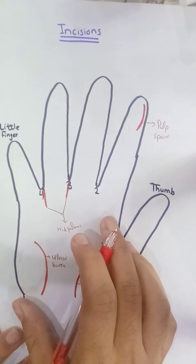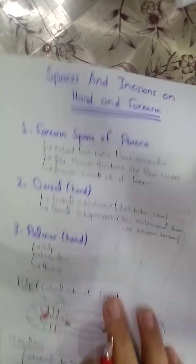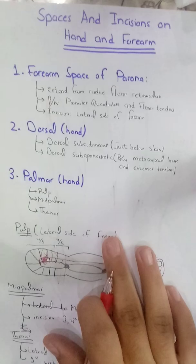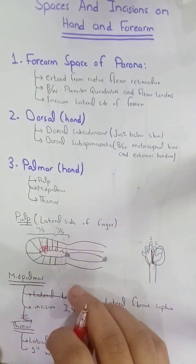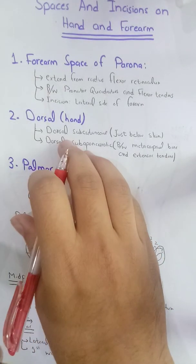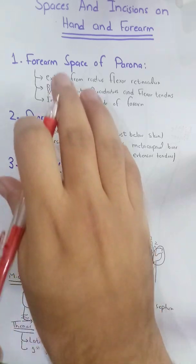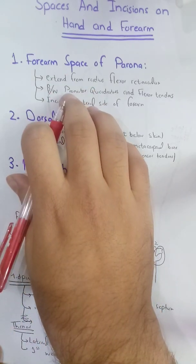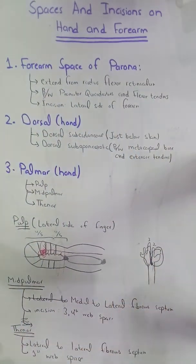So these are the incisions on the hand, and these were the spaces in the forearm and the hand: the pulp space, the mid palmar space, the thenar space, the dorsal subcutaneous space, the dorsal subaponeurotic space, and the forearm space of Parona. Thank you.